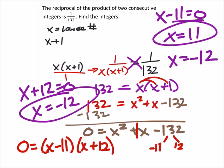So we have two answers for what would be x, which we described as the lower number. So for 11, we would have 11 and 12. If I multiply these two together, the reciprocal of that would be 1 over 132. So these two work.